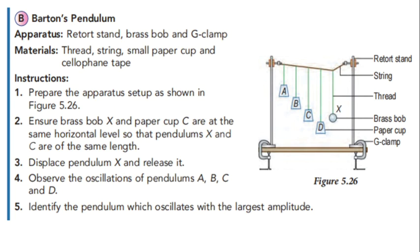The other pendulums are subjected to a periodic force and they start to oscillate. Pendulum B and brass bob X have the same natural frequency because both are the same length. The brass bob X receives a bigger amount of energy from pendulum B compared to each of the other pendulums.